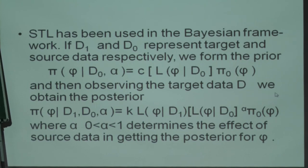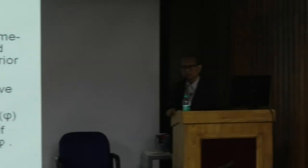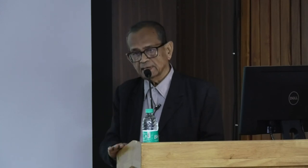You are not merely augmenting in the usual sense of adding data - you are linking up the source domain data to derive the posterior of the data in the target domain. How much you allow that prior to affect the posterior of the data in your target domain is by an appropriate choice of the parameter alpha. This is how statistical transfer learning is connected with Bayesian methodology.